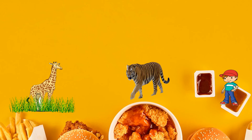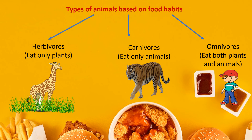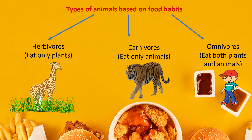We discussed types of animals based upon their food habits. First, herbivores — all those animals which eat only plants as their source of food, for example cow and giraffe. Then carnivores — animals which depend upon other animals for their food, those who eat other animals. Then omnivores — animals which eat both plants and animals, for example human beings and crows.